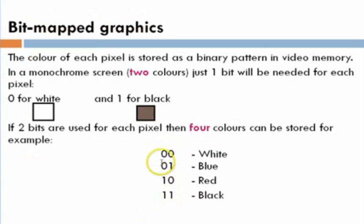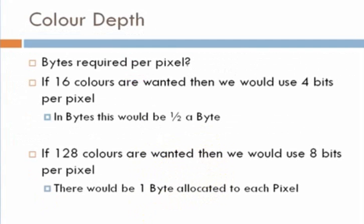Now, each bit pattern, for example, 0, 0, 0, 1, 1, 0, 1, 1. Each of these bit patterns will represent a different color.